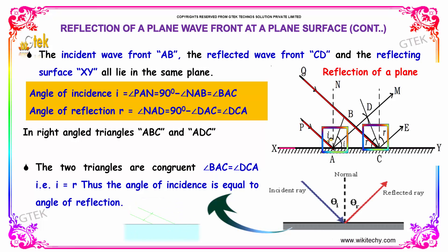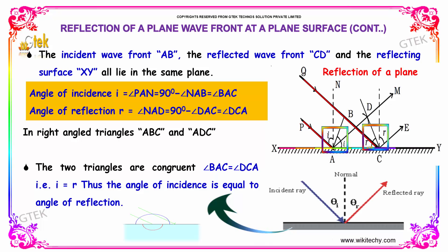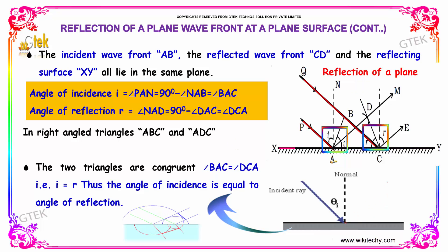The angle of reflection is the angle NAD, which equals 90 degrees minus angle DAC. So NAD is the angle of reflection, equal to 90 degrees minus angle DAC.